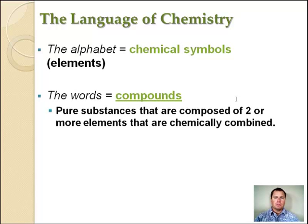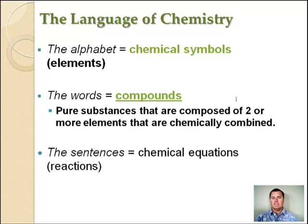And compounds are pure substances made up of two or more elements that are chemically combined. They're two or more elements that are stuck together to form one single substance. What do we do once we have words? Well, we put them together to write sentences. And the sentence in chemistry are chemical equations or reactions. We're not really going to get into those much until second semester because you really have to get down writing these compounds first.